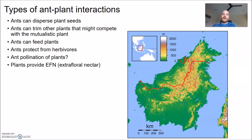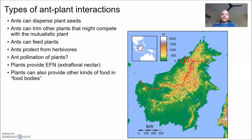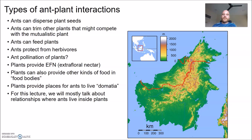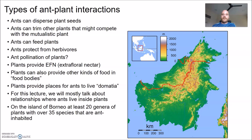What can plants do for ants? They can provide extra-floral nectar (EFN) — nectar produced somewhere outside of flowers, giving ants a source of carbohydrates. Plants can also provide food bodies, which are rich in lipids and proteins. Plants can also provide places for ants to live, such as swollen stems, leaf sheaths, or recurved leaves. For the rest of this lecture, I'll focus on examples where ants live inside plants. Here on the island of Borneo, we have at least 20 different genera of plants — involving 35 different species — all of which are ant-inhabited.